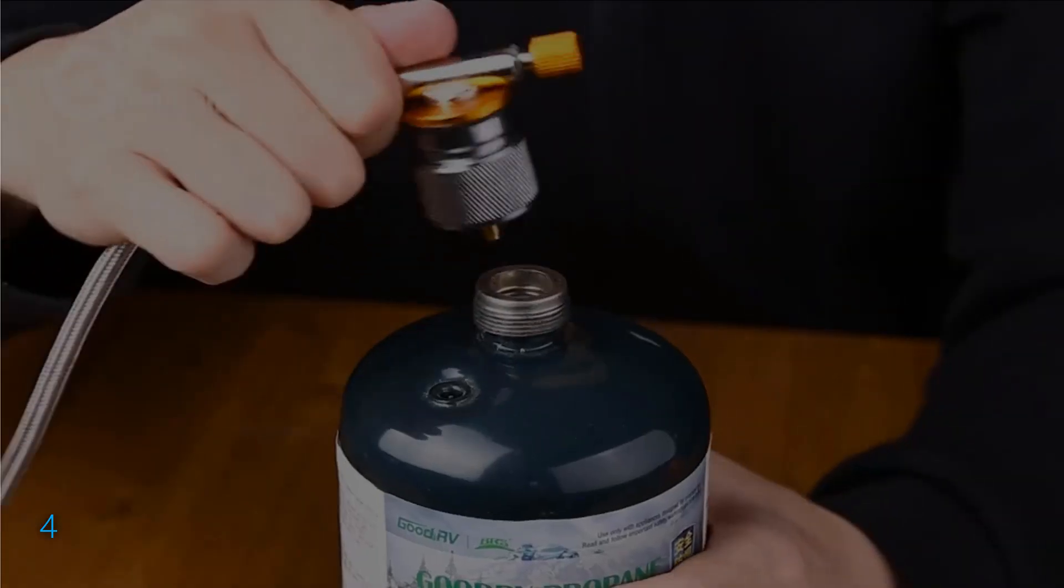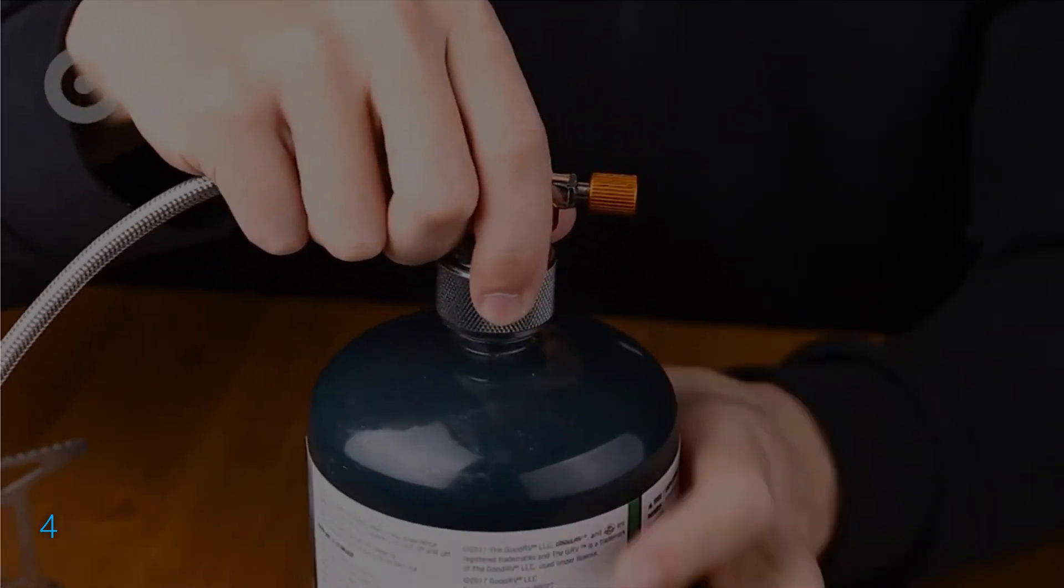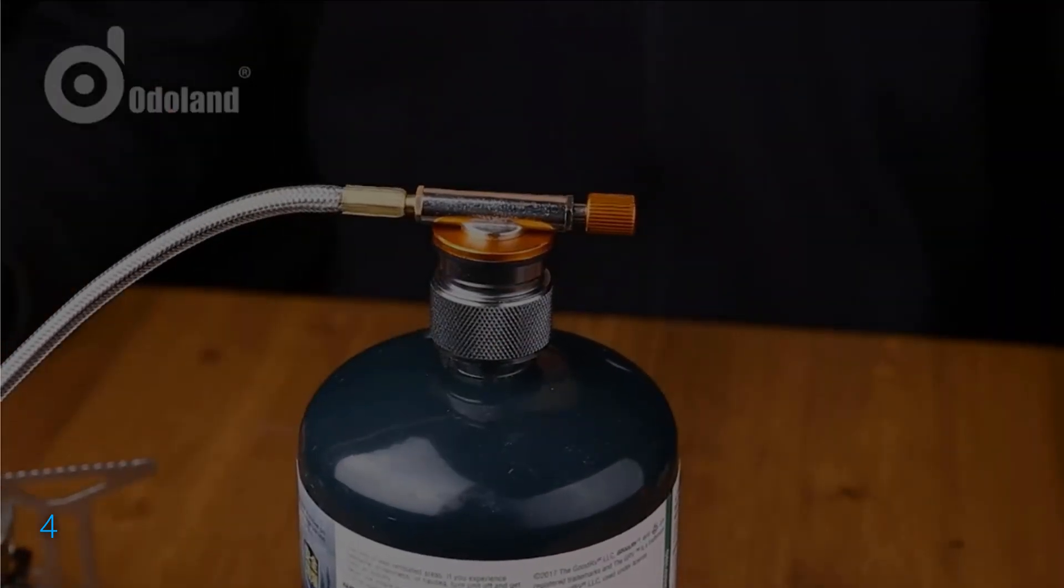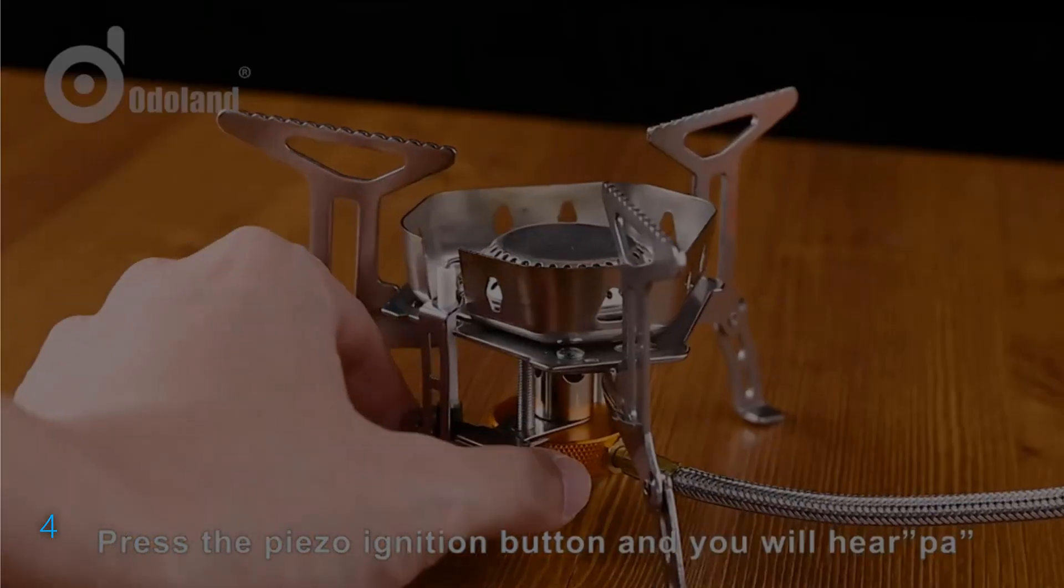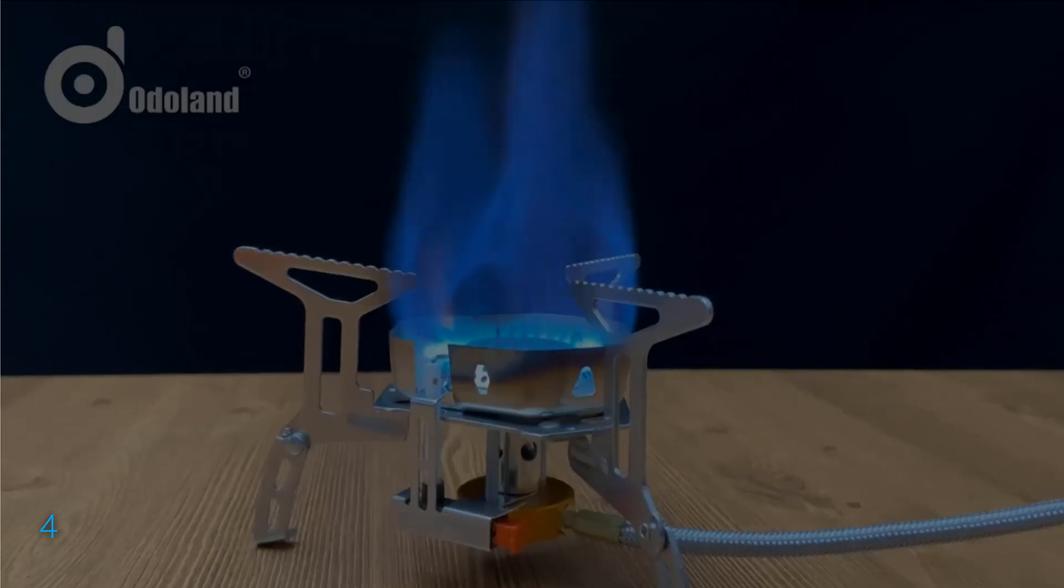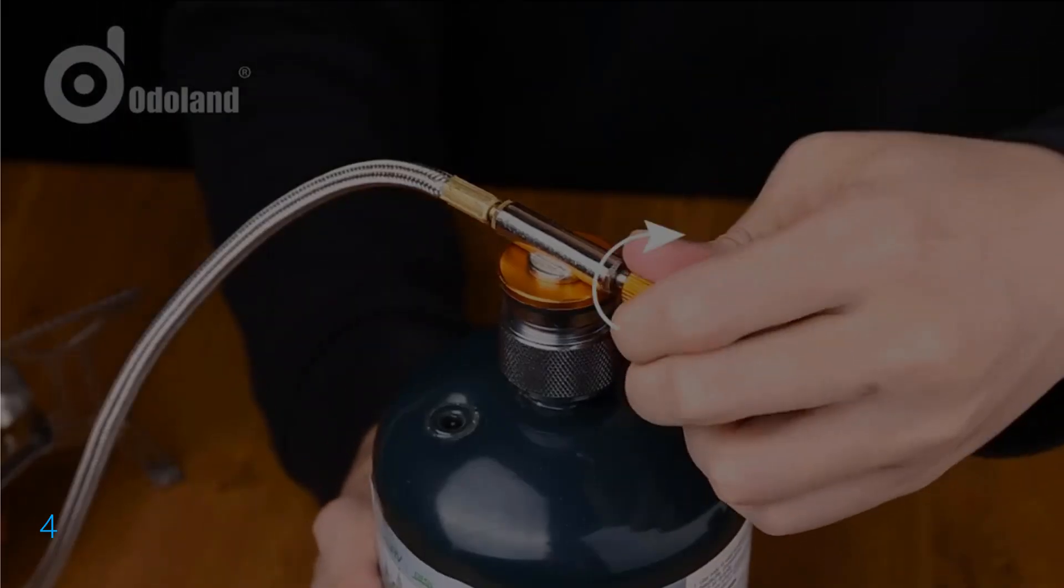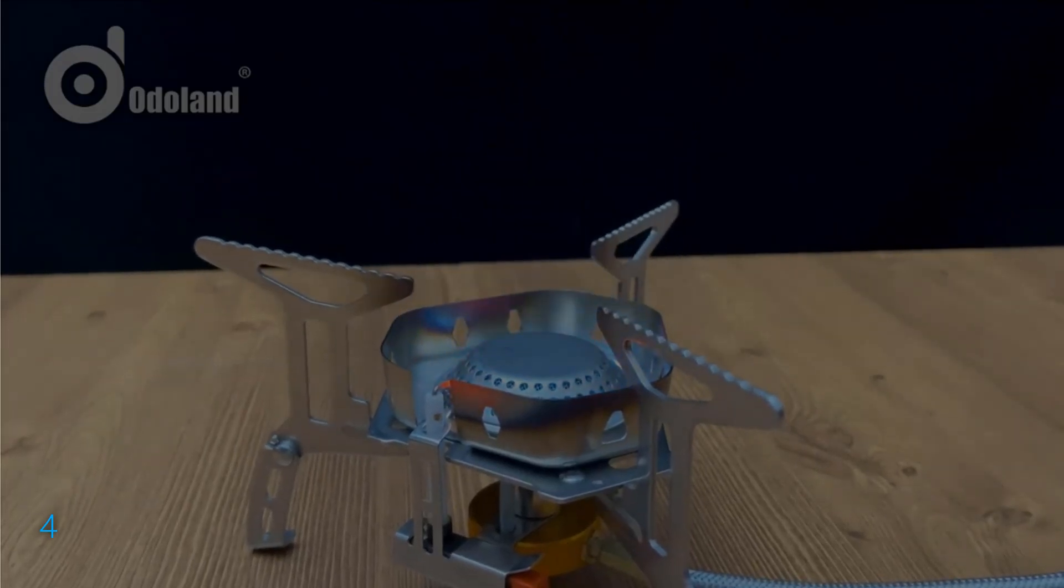It comes with two connector types, ensuring compatibility with various gas tanks. With a maximum energy output of 3,500 watts, it boasts rapid boiling times, heating one liter of water in just around three minutes. When not in use, simply fold it down and stow it in the included carrying case for easy transport. Get ready to elevate your outdoor cooking game with the Odoland 3500W Windproof Camp Stove.